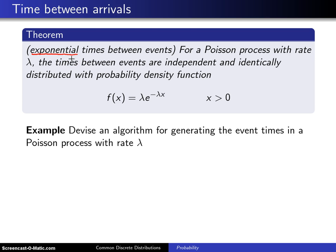Here is an example: devise an algorithm for generating the event times in a Poisson process with rate lambda. You may recall from chapter 3 that in order to generate from a continuous distribution, you first have to find its cumulative distribution function, so we will start there.